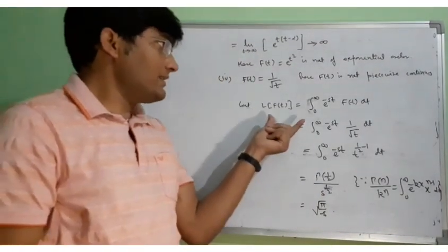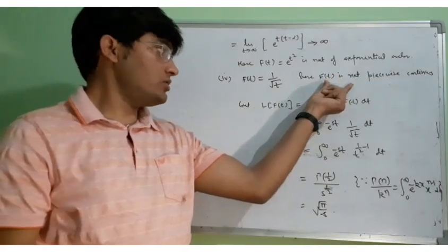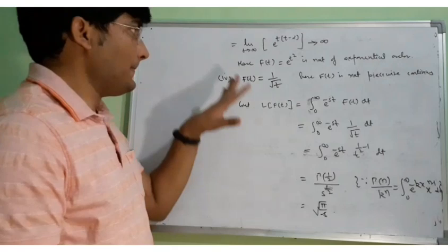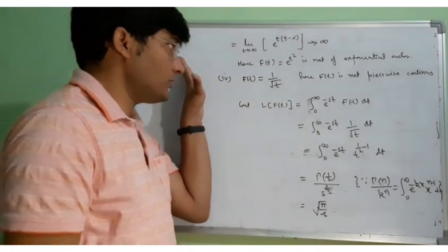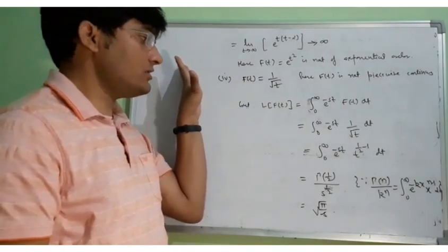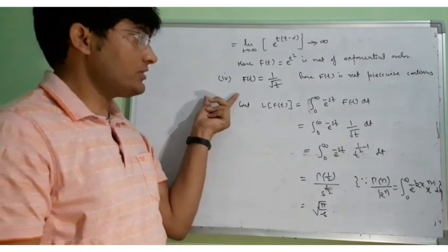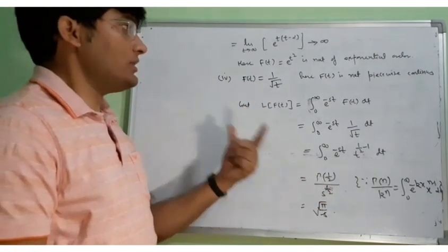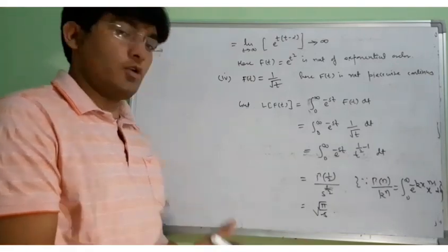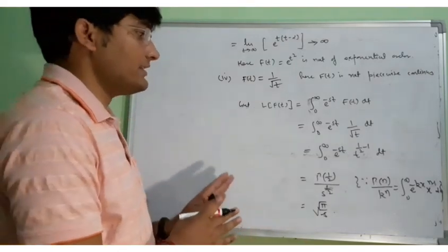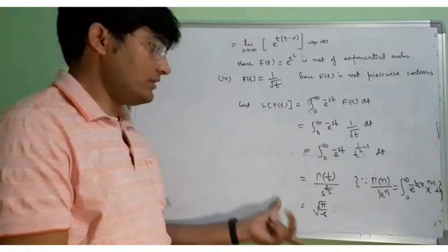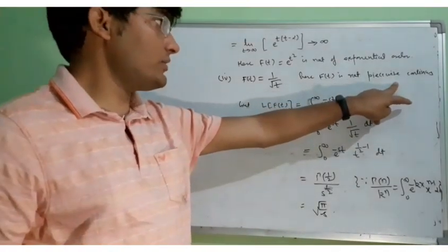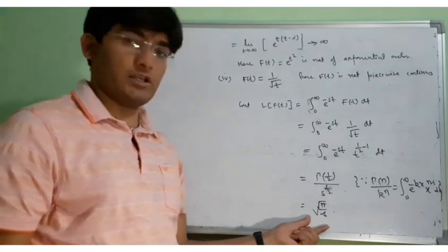So the answer is root pi over root s. You can see that here the function F(t) = 1 over root t is not piecewise continuous, although its Laplace transform exists. This confirms that the sufficient conditions — that F(t) be sectionally continuous and of exponential order — are not necessary conditions.